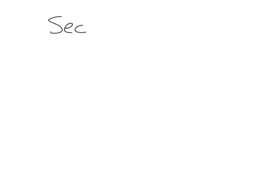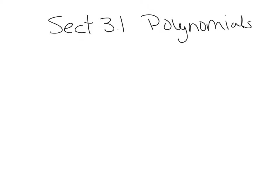We're working in intermediate algebra. This is section 3.1. The topic is polynomials. If you're following along in your book, this starts on page 97.